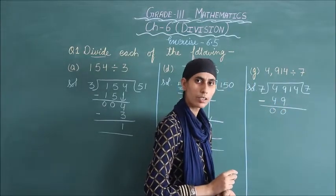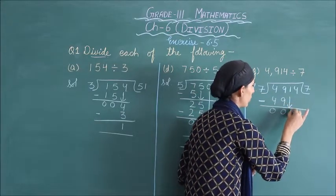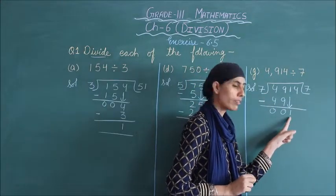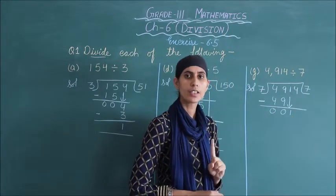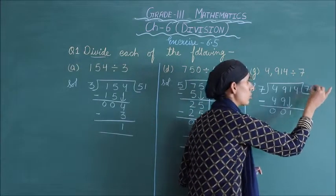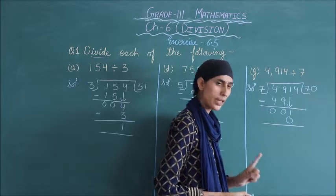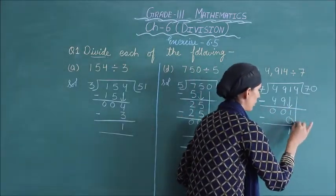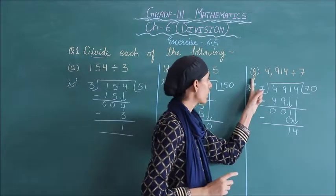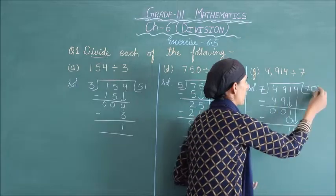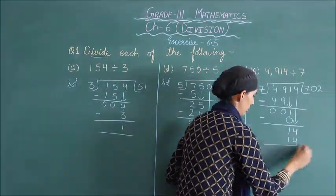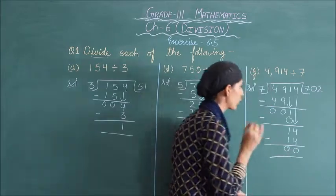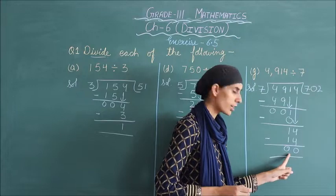Next, bring down the digit 1. Now the divisor 7 is greater than 1, so we put 0 in the quotient: 7 zeros are 0. Subtract: 1 minus 0 is 1. Bring down the next digit, 4. Our number becomes 14. In the 7 times table, 14 comes at 2 times: 7 twos are 14. Subtract: 14 minus 14 is 0. So your quotient is 702 and your remainder is 0.